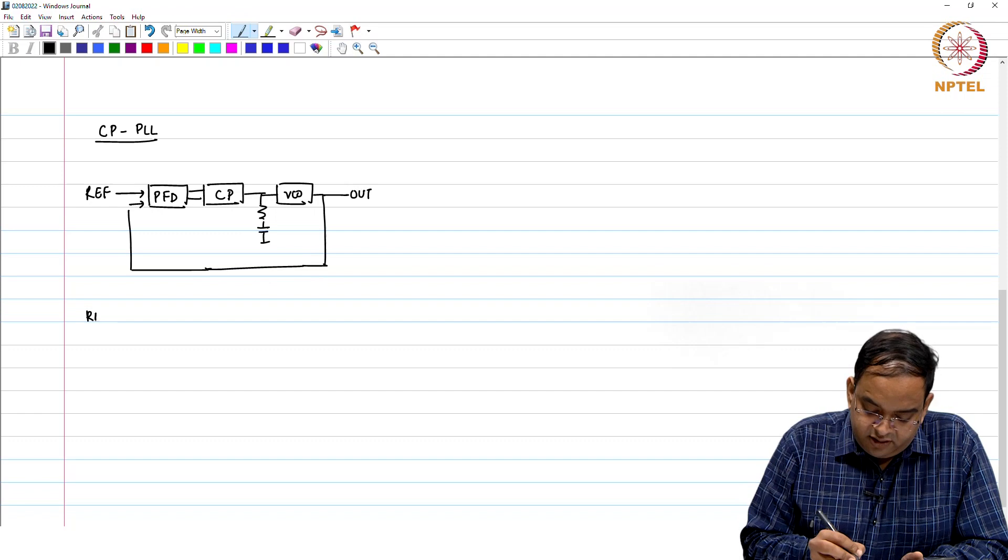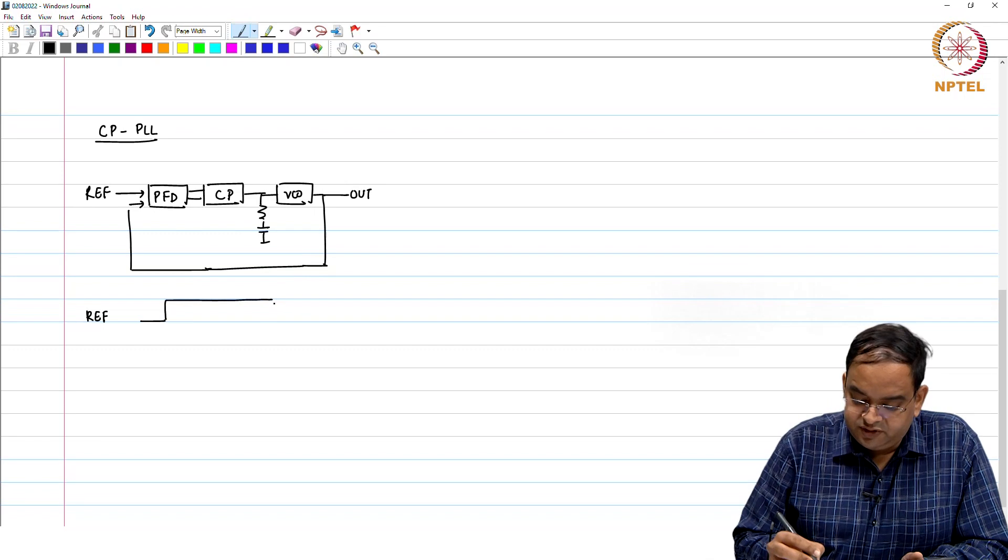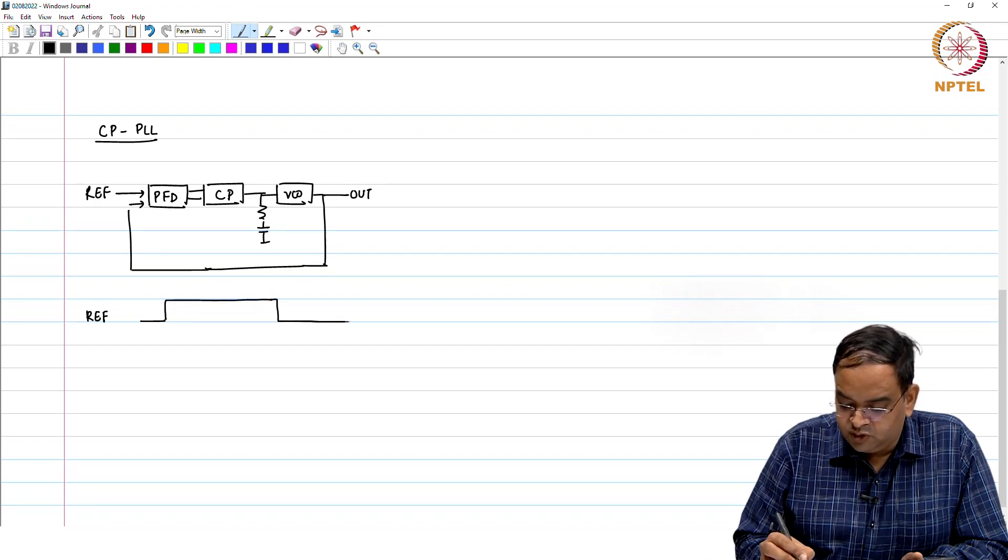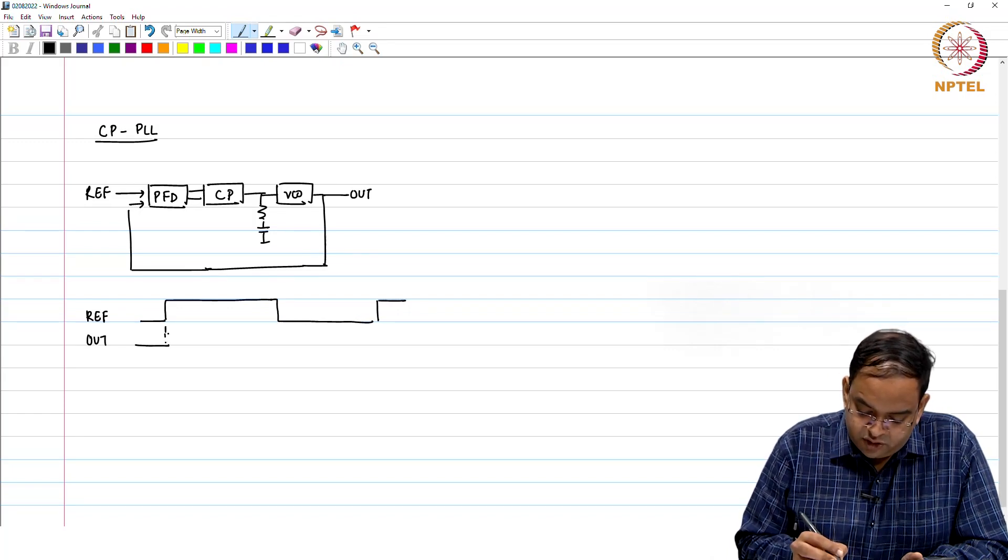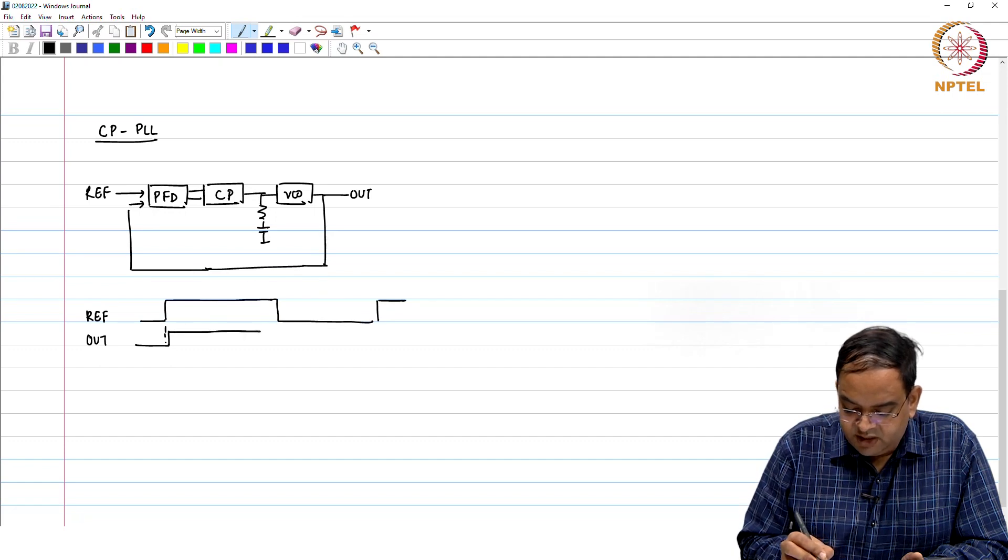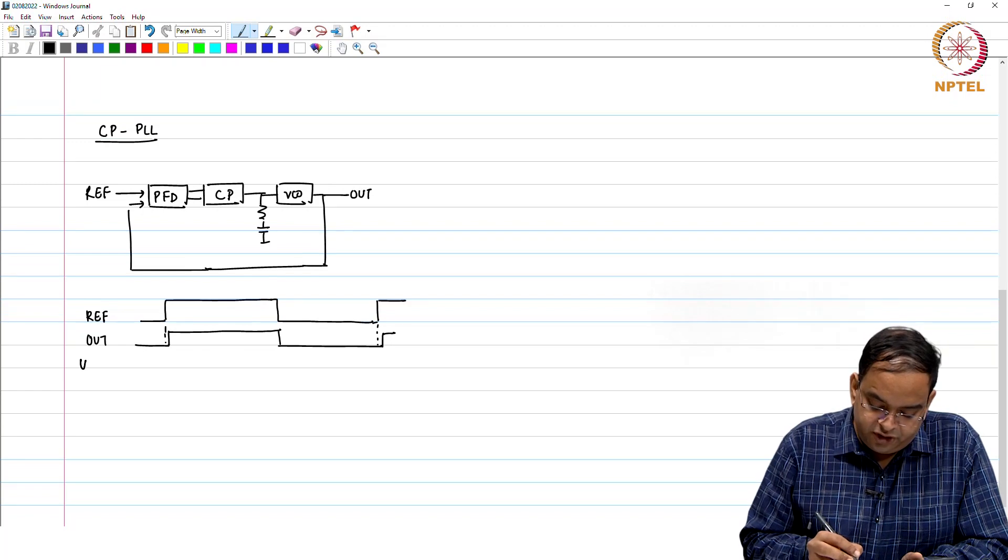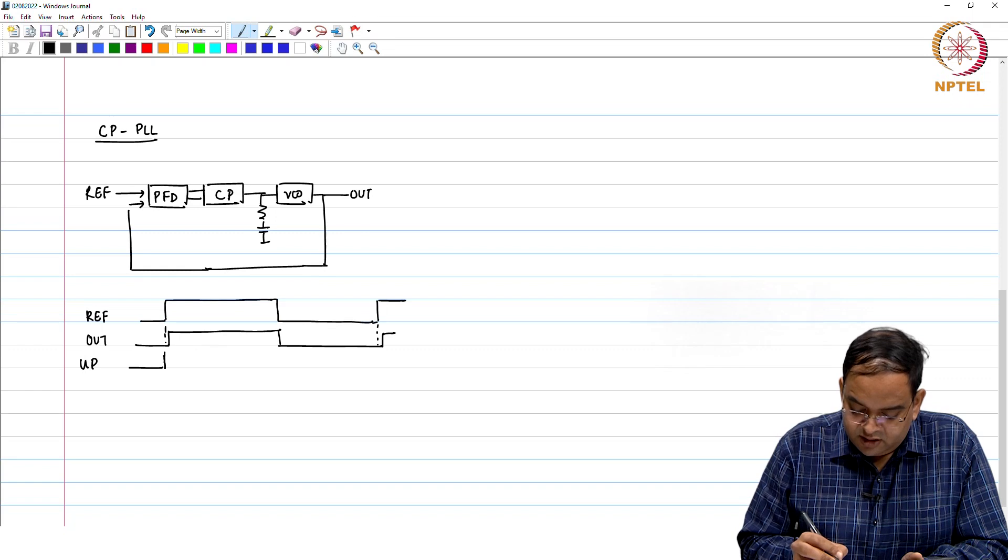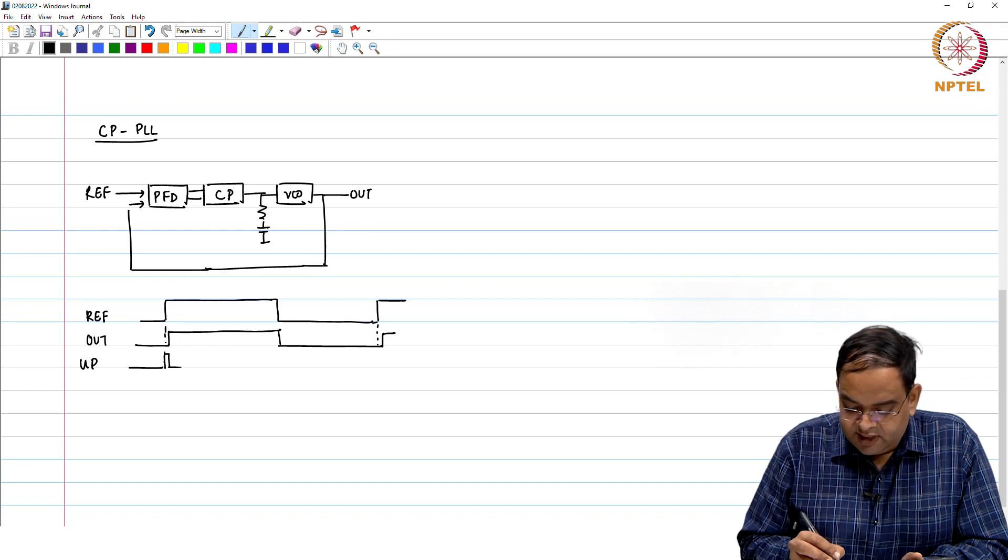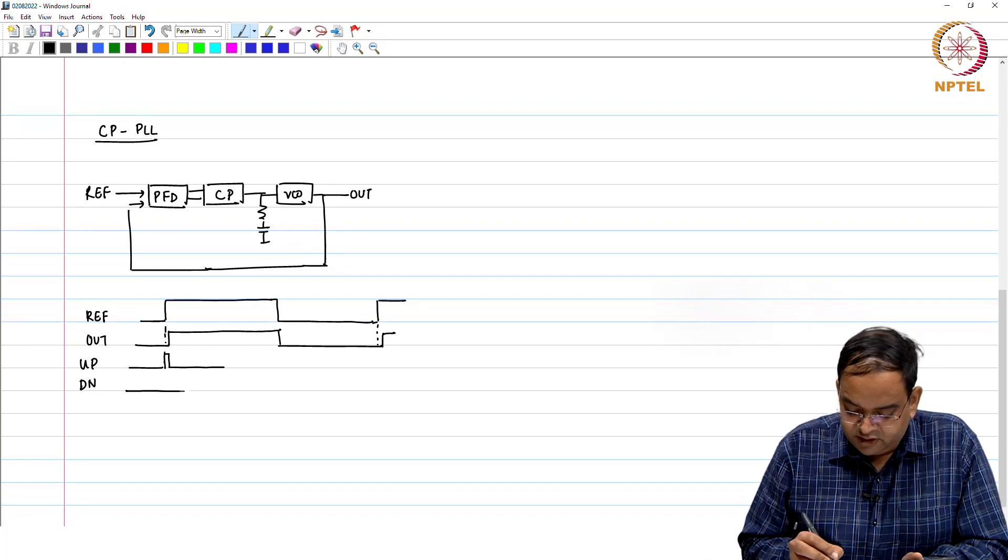What happens is that when your reference signal comes very close to your output signal, this phase error may be much much lesser, but it is still there. It may appear it is zero, but it is not zero. In response to this phase error, up goes high and it will come back as out signal goes high. This is the kind of up and down signal which we have.